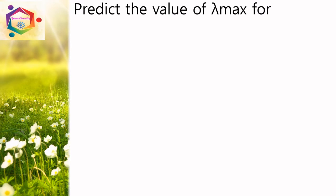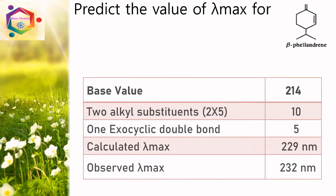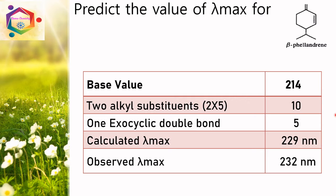Predict the value of lambda max for beta-piladiene. This is a heteroannular diene with 2 ring residues and 1 exocyclic double bond. Base value is 214 nm, then 2 alkyl substituents: 2 × 5 = 10, plus 1 exocyclic double bond adds 5. Totally, calculated value is 229 nm and observed lambda max value is 232 nm.